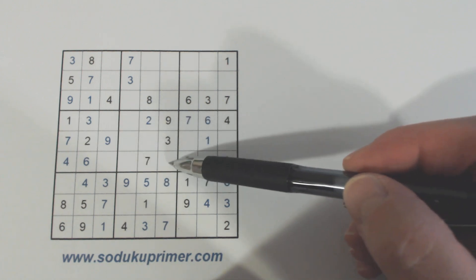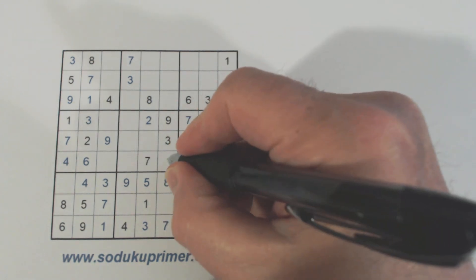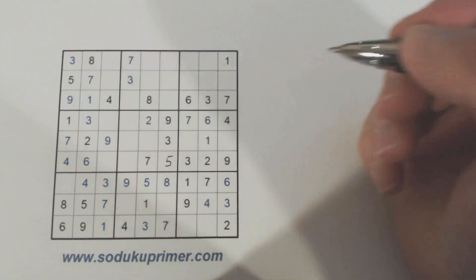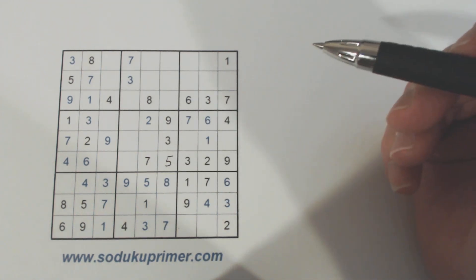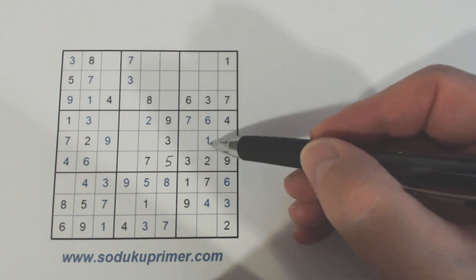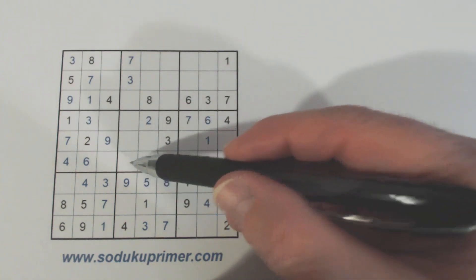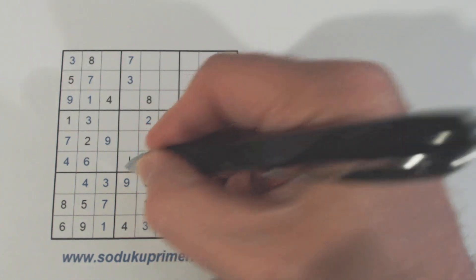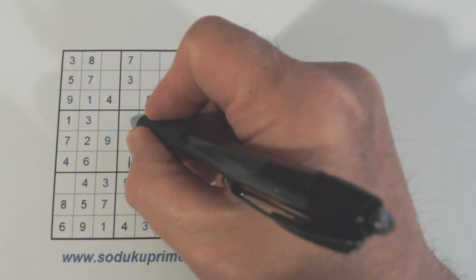So the only place a 5 can go is right here. So knowing that rule we can with confidence put a 5 right there. Now we've got a 1 here and a 1 here. So we know that's a 1. And therefore we know this is an 8.